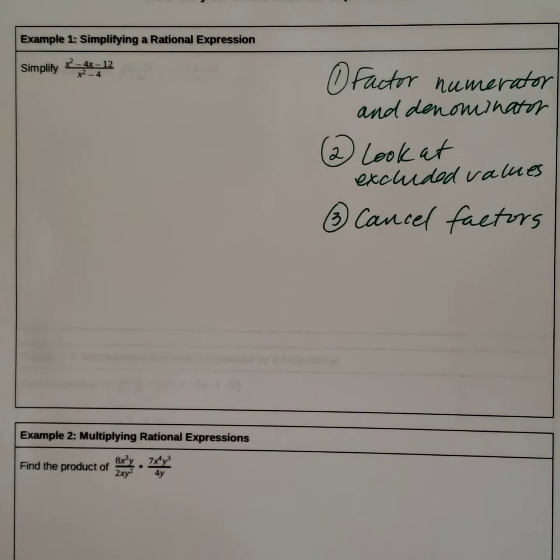So in the numerator we have a trinomial. This was the reason, of course, for reviewing factoring. So we have a trinomial in the numerator: x squared minus 4x minus 12.